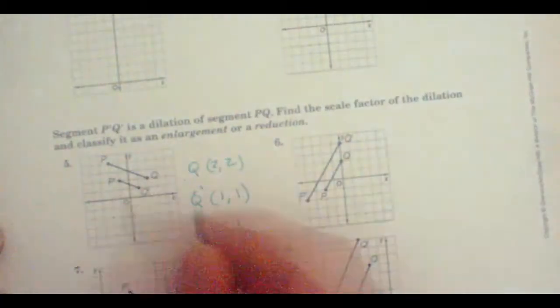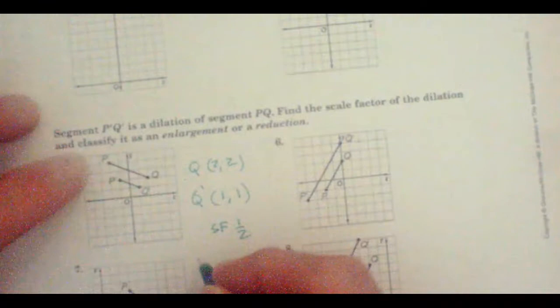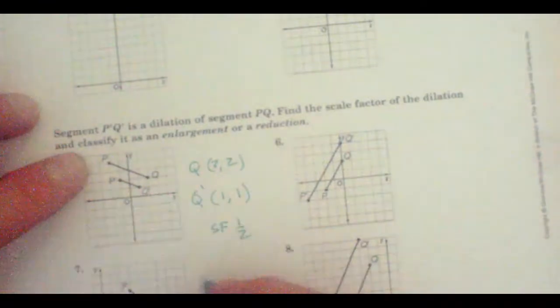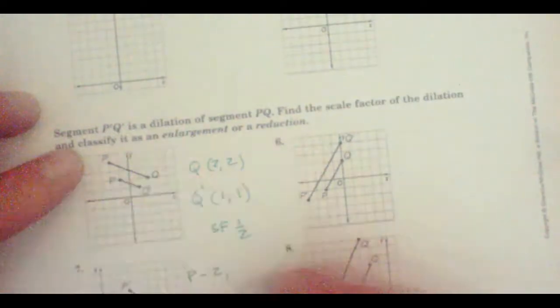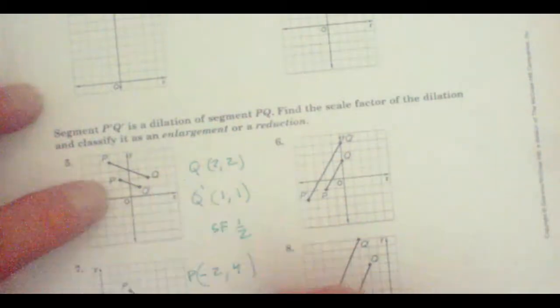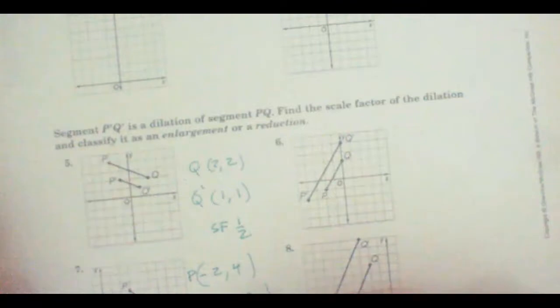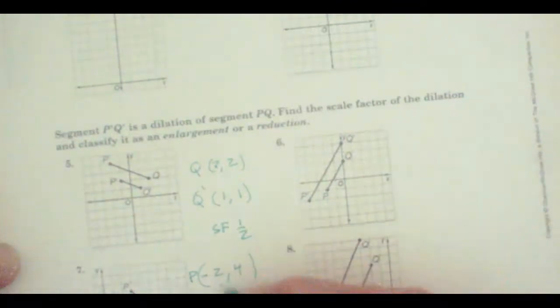P is negative 2, P prime negative 2. And it is 2, 4. Negative 2, 4. And this one here is negative 1, 2. You can see that the P coordinate is exactly half in both cases.